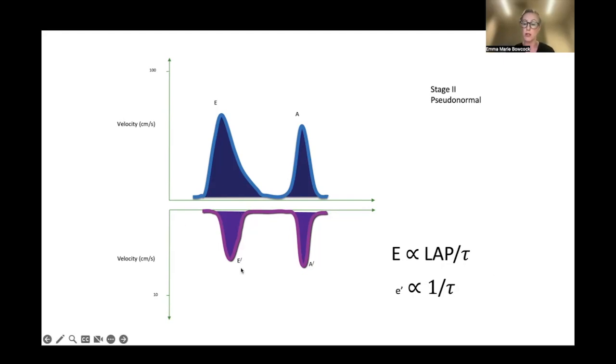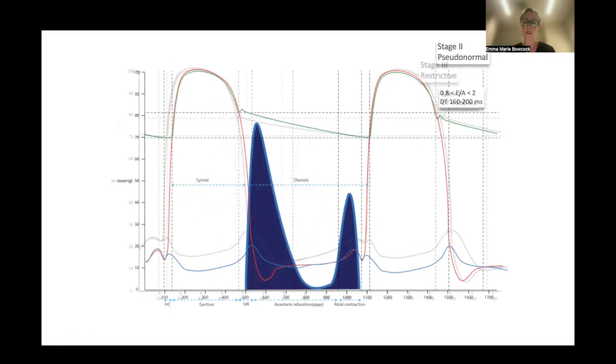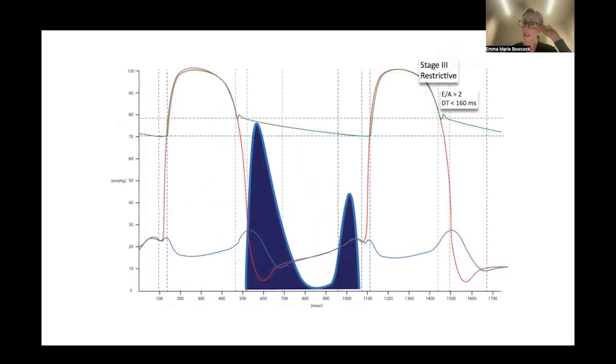As we move to restrictive disease, we get our E/A ratio becoming even higher, more than 2. In those with impaired left ventricular systolic function, ejection fraction in the guidelines of less than 50%, or evidence of structural heart disease with left ventricular ejection fraction greater than or equal to 50%, we can use that guideline. An E/A of more than 2 would automatically put patients into grade 3 diastolic dysfunction. Importantly for us, that means they've got raised left atrial pressures.